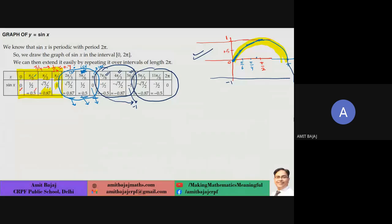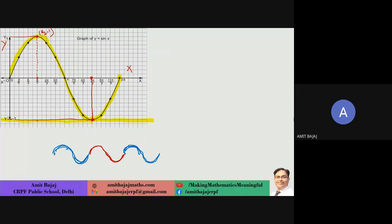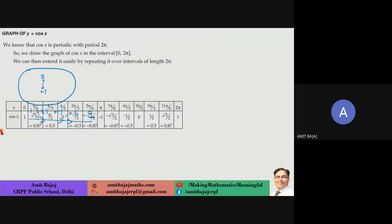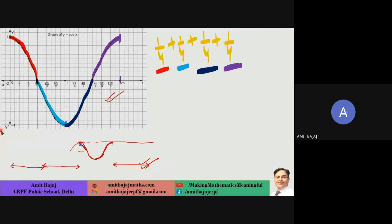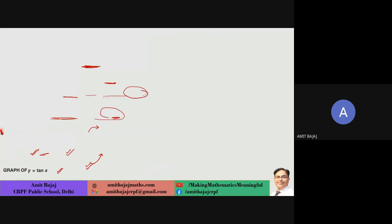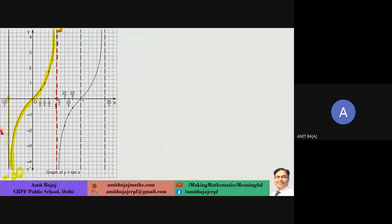To graph sin x, you don't need to memorize the table — just remember the shape. From 0 to 2π: sin increases from 0 to 1 between 0 and π/2, then decreases, decreases further to −1, then starts increasing again. The same behavior repeats left and right because it's a periodic function with period 2π. Similarly we considered the graphs of cos x and tan x — just check 2–3 basic angle values and you can easily graph these functions.